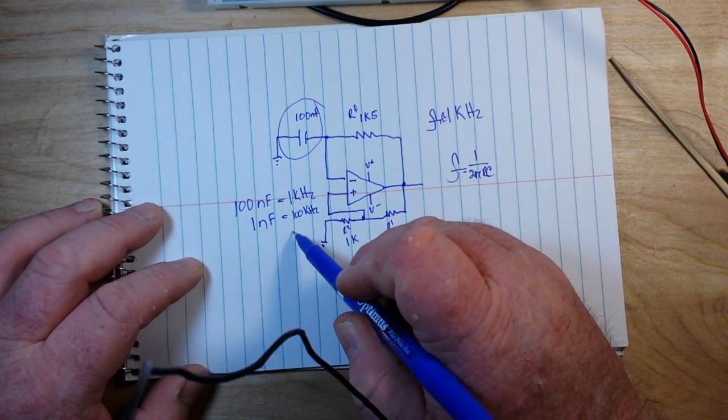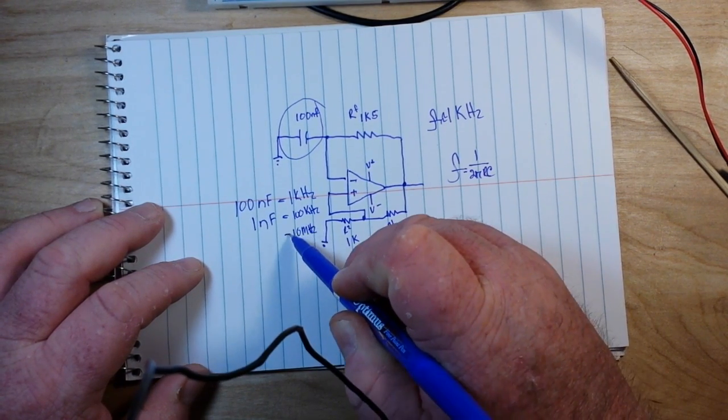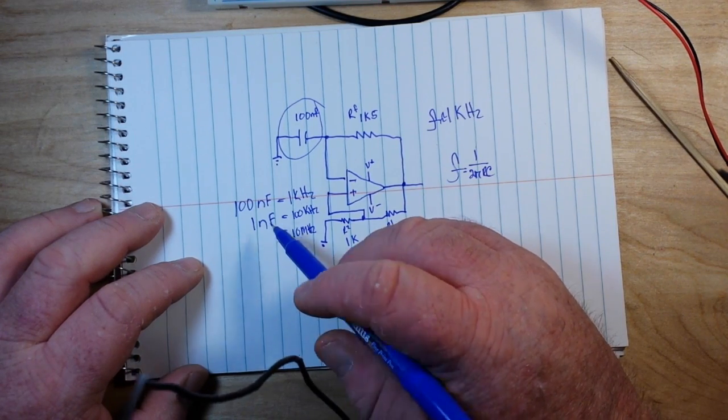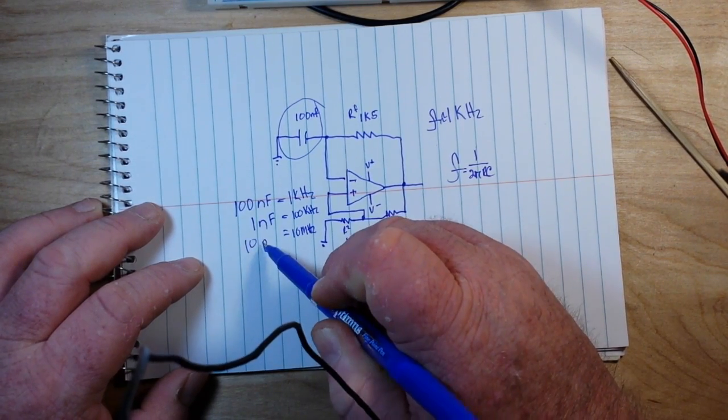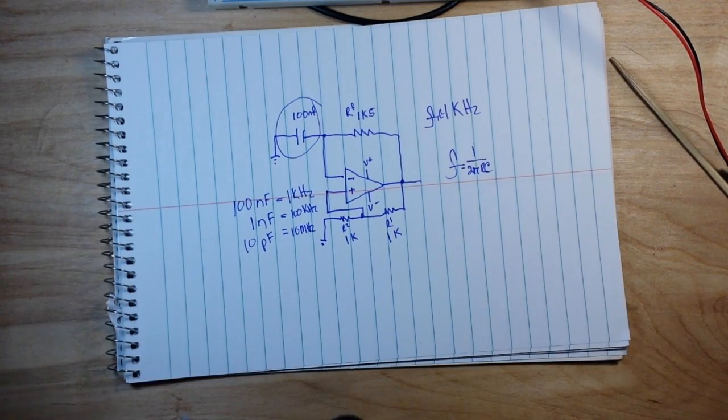And say we wanted 10 megahertz, what do you got? Do your math. 10 picofarads. So that's how you can set up an oscillator and tune it to whatever frequency you want.